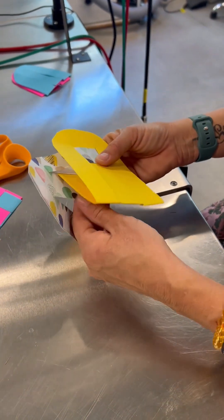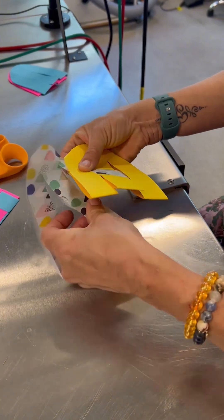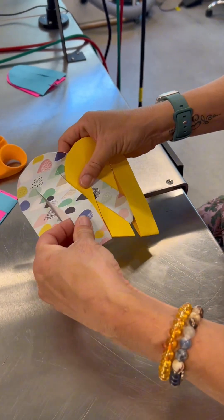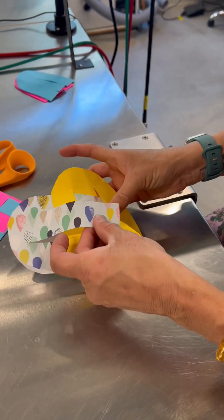Then we go with the next one. You're going to alternate. So you're going to take this one, the pattern side, and weave the solid color in. Push it all the way up and alternate.